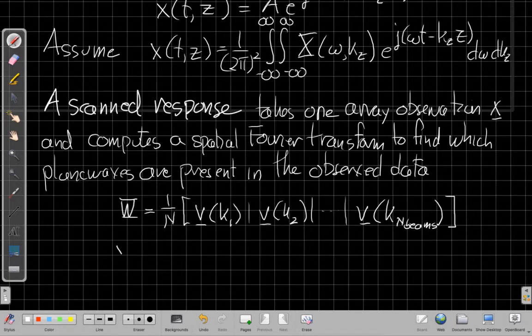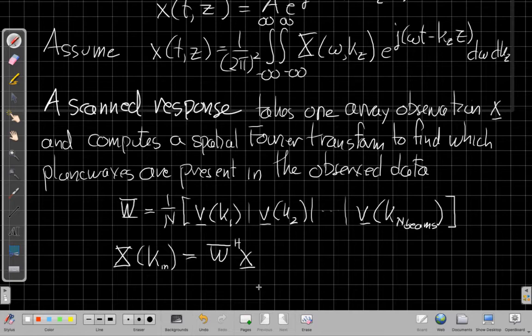And so I can then say, well, I can find the vector of how much energy is present for each of these plane waves when I take W Hermitian, this manifold, or this big matrix with all the conventional beamformers, and take the inner product with x. This is the narrowband version.